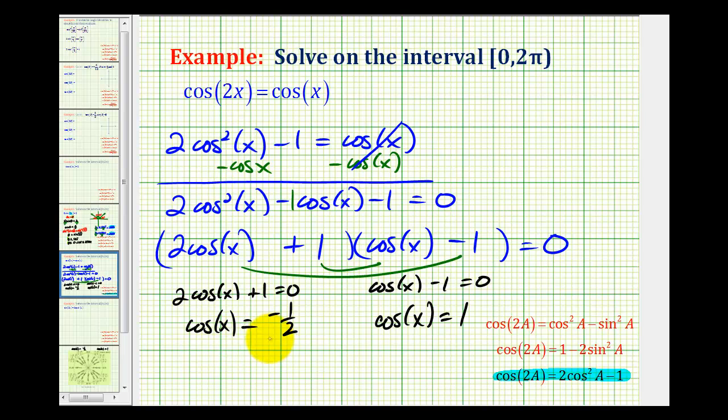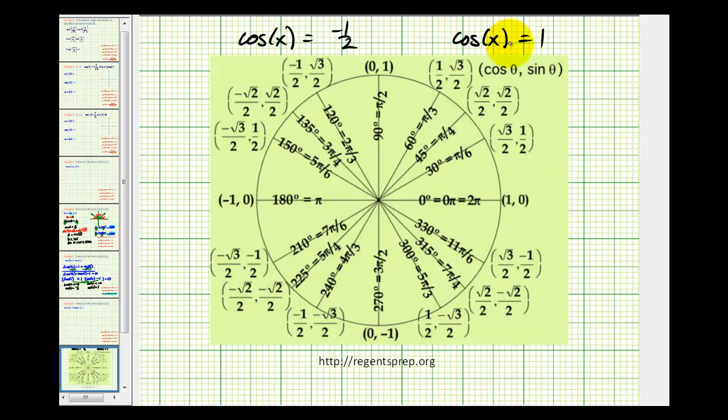To determine the values of x that satisfy these two equations, we'll use a unit circle. Remember, cos(θ) equals x, so we'll look for x-coordinates on the unit circle of -1/2 and +1.